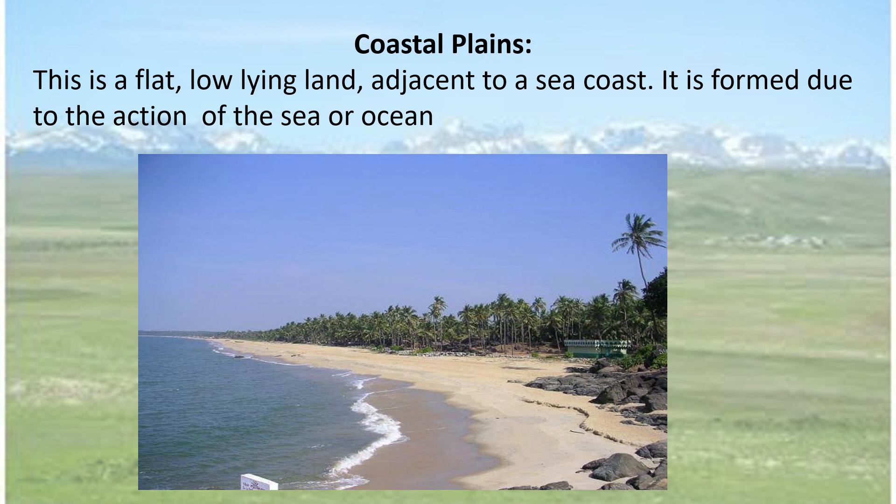Sometimes we have the sea or the ocean bringing in waves. These waves bring in lots of sand and silt — they flood a huge area, come back, and so on. This kind of land is quite flat, quite low, flooded not all the time but at certain times of the day, or may not be flooded because the water has receded, but it is extremely low-lying and adjacent to a seacoast. This kind of an area is called a coastal plain.